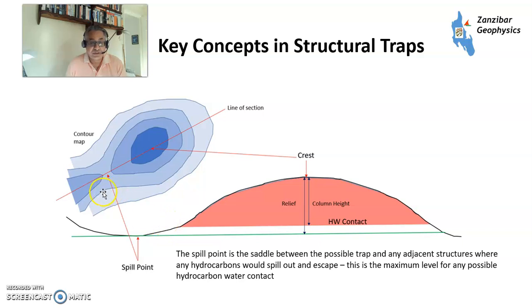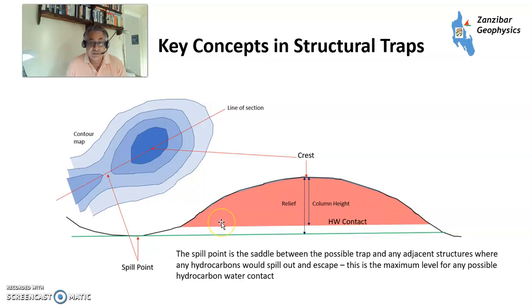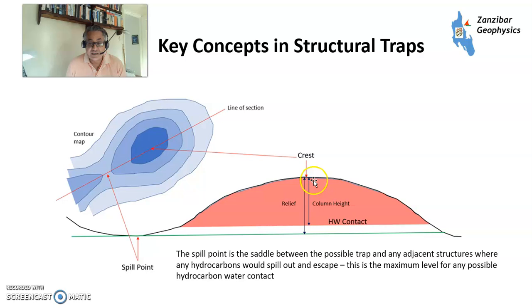Key concepts within the trap: here we have an anticline trap and a contour map. That's the crest, going downhill is the spill point — where hydrocarbons spill out and migrate upward. You also have a contact, which is the interface between hydrocarbon-bearing rock and water-bearing rock. The contact won't necessarily be at the spill point — that's an ongoing discussion in the geophysics and geology community. Relief is the height between the crest and the spill point; column height is between the crest and the hydrocarbon-water contact.